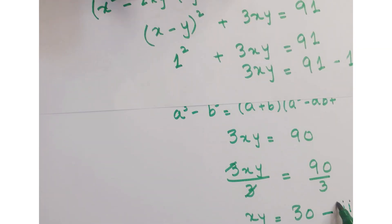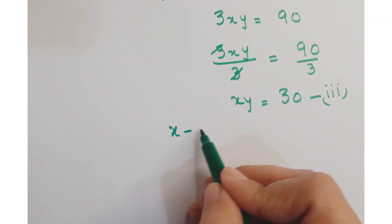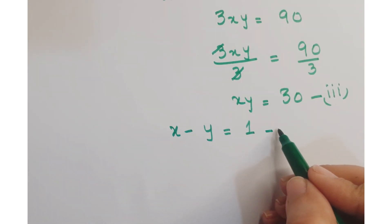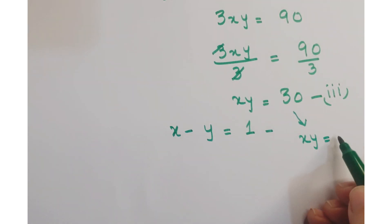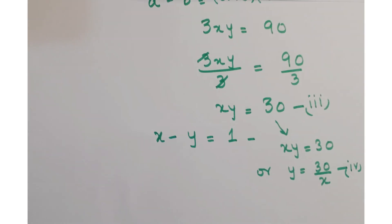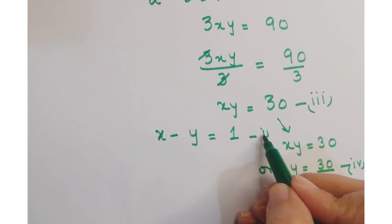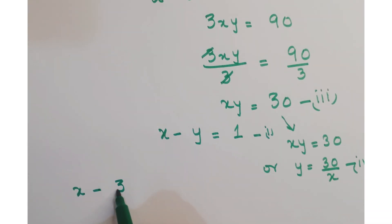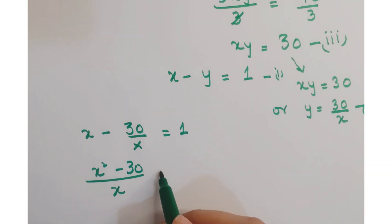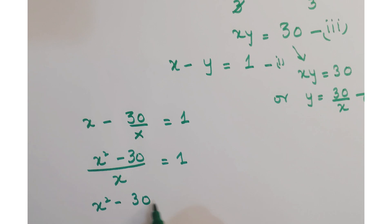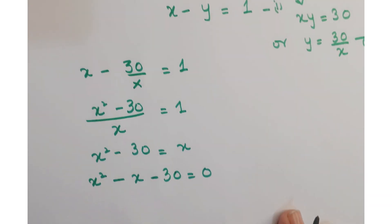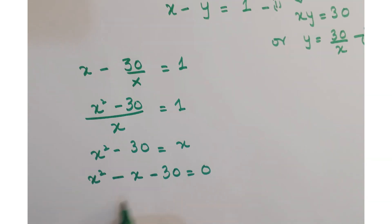Calling xy equals 30 as equation 3, and we also have x minus y equals 1 from equation 1. From equation 3, we write y equals 30 over x — equation 4. Substituting into equation 1: x minus 30 over x equals 1. Taking LCM gives x squared minus 30 equals x, or x squared minus x minus 30 equals 0. This is a quadratic equation we solve by splitting the middle term.